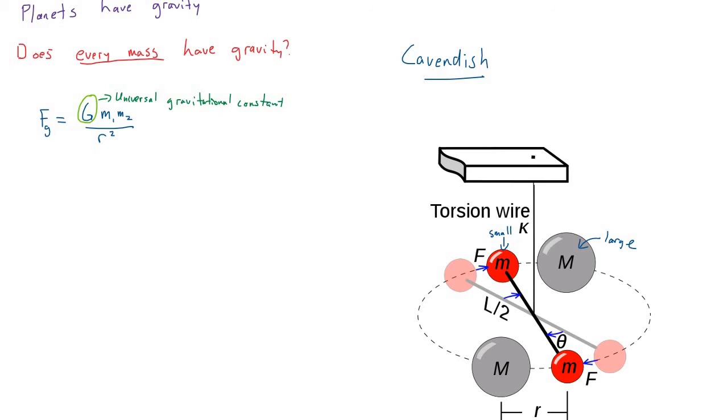So imagine you take those large masses away, the gray ones, and you just have the small red ones, and they're hanging on this torsion wire. Torsion wire is kind of a wire that has some resistance to being rotated. So these masses were actually originally hanging in the sort of grayed-out sections, grayed-out masses here. That's where they originally were. That's where they naturally hung on that torsion wire.